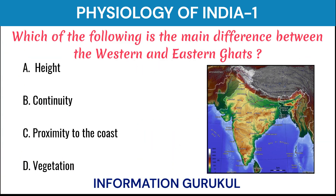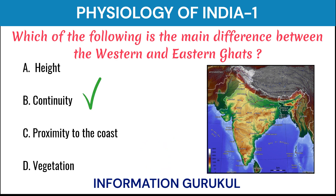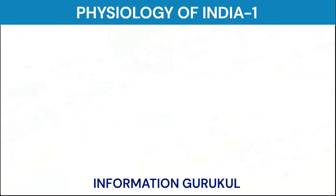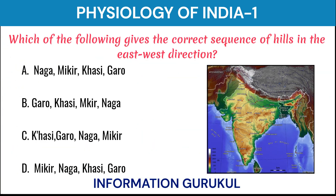Which of the following is the main difference between the Western and Eastern Ghats? Continuity. Which of the following gives the correct sequence of hills in the east-west direction? Naga, Mikir, Khasi, Garo.